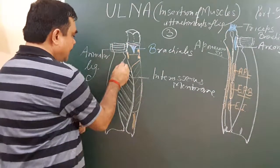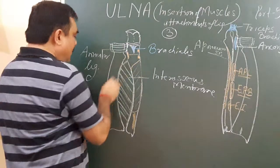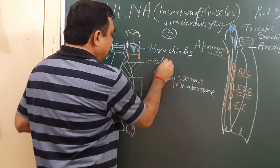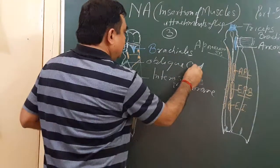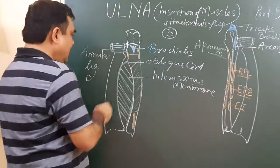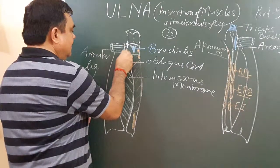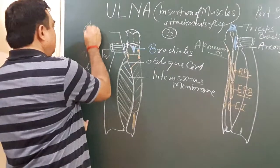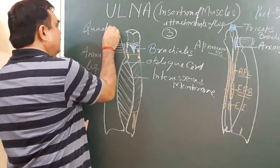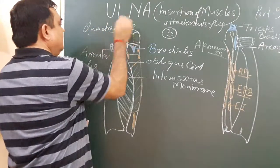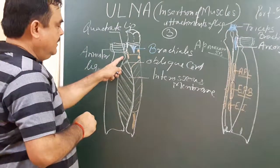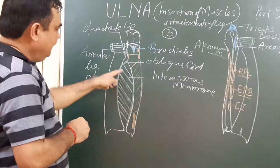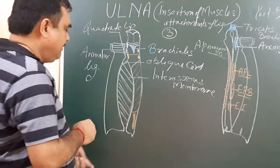Another structure here is the oblique cord. And here is the quadrate ligament, above the radial tuberosity. Below the radial tuberosity is the oblique cord, and below that is the interosseous membrane.